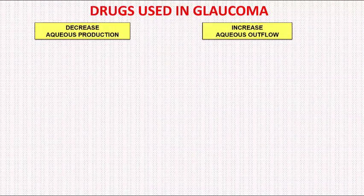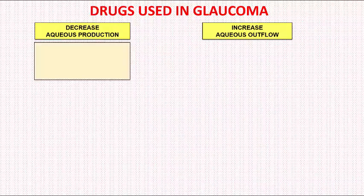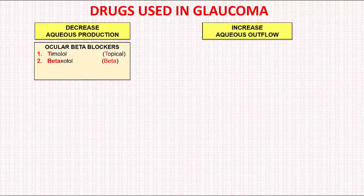Glaucoma occurs due to either increased production or decreased outflow of aqueous humor. So the drugs used in glaucoma act by causing either decreased production or increased aqueous outflow. The first class of drugs causing decreased production are the ocular beta blockers: timolol, betaxolol, levobunolol, and carteolol. You can remember these by the mnemonic for topical beta blockers, which is appearing on the screen.